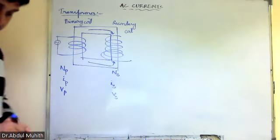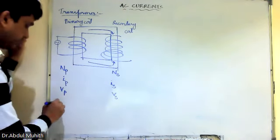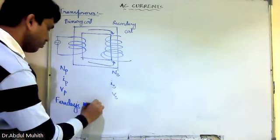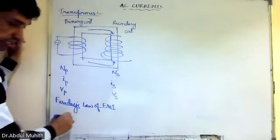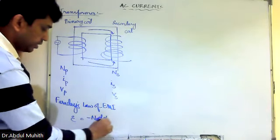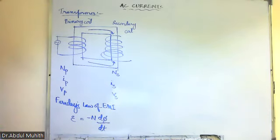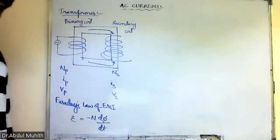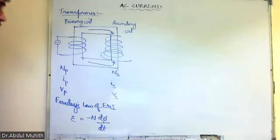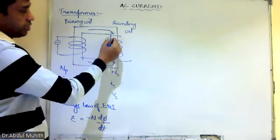As per Faraday's law of electromagnetic induction, induced EMF E = −N dφ/dt, where φ is the flux in each turn of the core at time t due to current in the primary when voltage Vp is applied. So EP = −Np dφ/dt and ES = −Ns dφ/dt. The alternating flux also induces a back EMF in the primary.